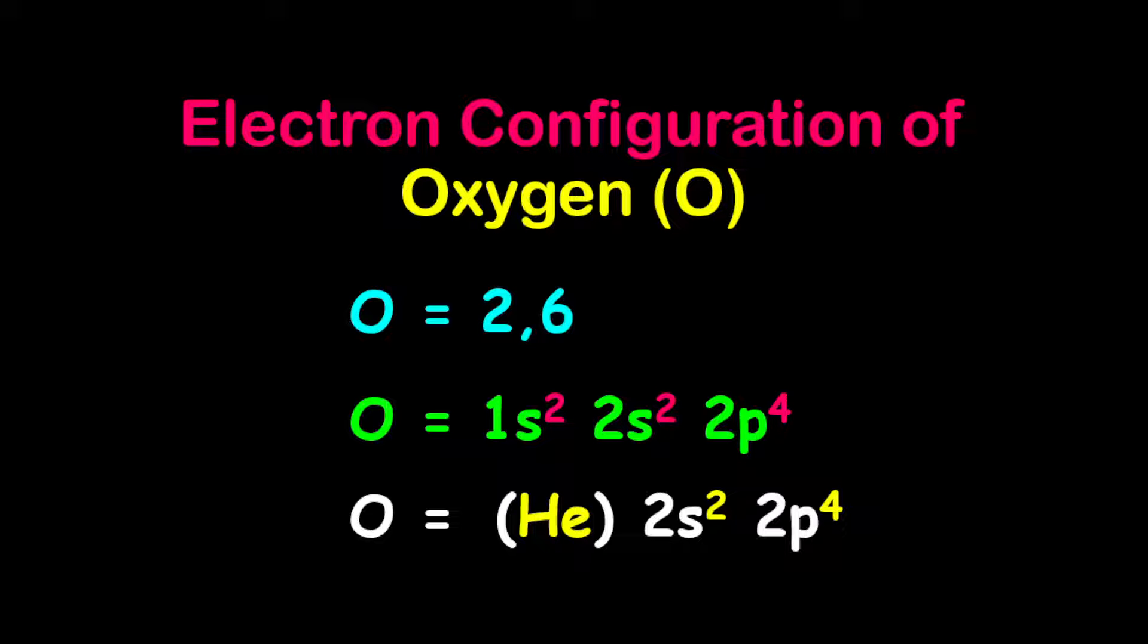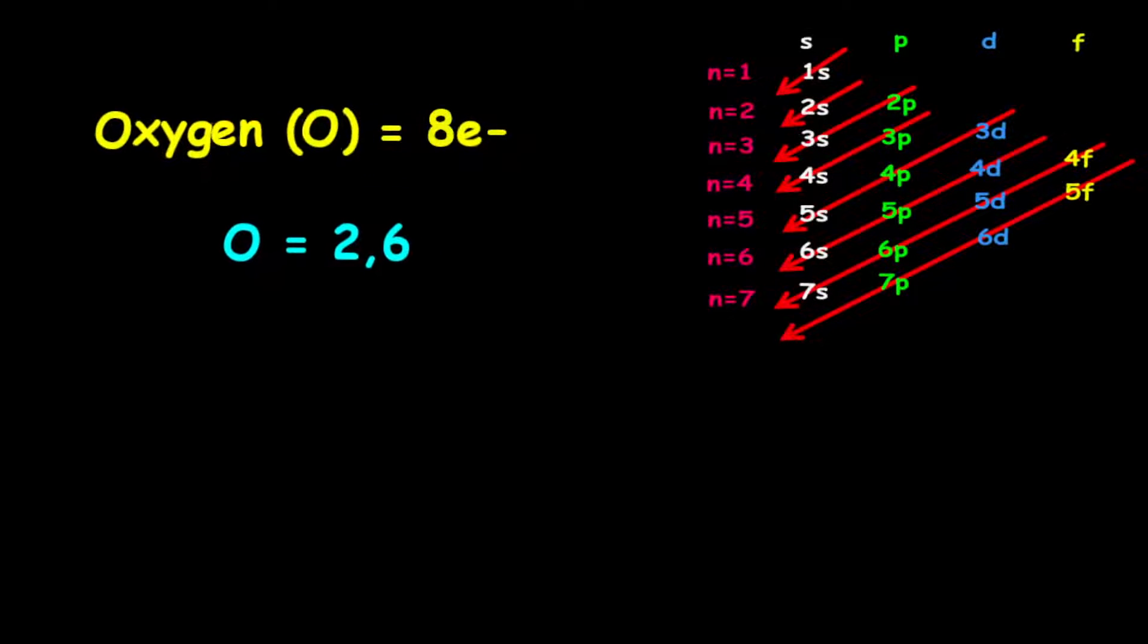Electron configuration of oxygen. Oxygen has 8 electrons, therefore 2 electrons on the first shell, 6 electrons on the second shell.